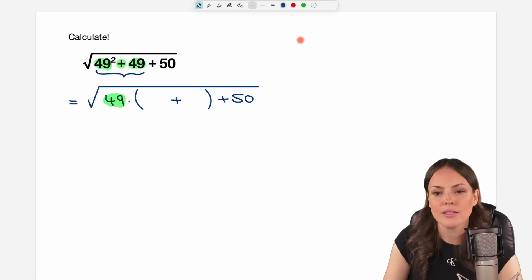Well, the 49 squared means we have 49 times 49. And out of this, I'm going to factor out a 49. So if I factor out this, this is not going to be there anymore. Only my 49 is what is left in here then.